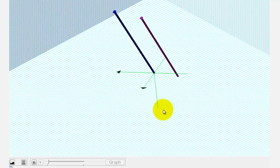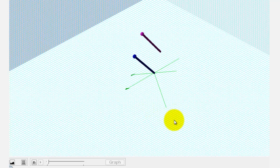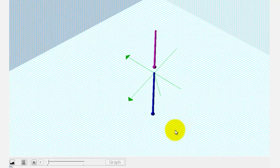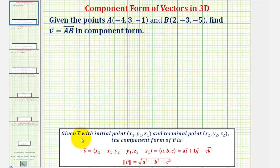So again, our goal here is to find the component form of this blue vector using the information given from the purple vector. When we have the initial point and terminal point of a vector in space, to find the component form of the vector,